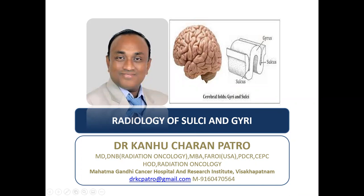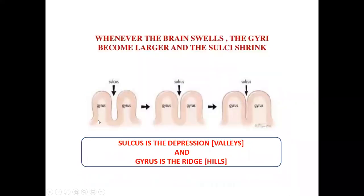I am going to cover the superficial part only, as required for radiation oncologists. What are sulci and gyri? The gyri are the projections and the sulci are the dips — sulci is the depression and gyri is the raised area.